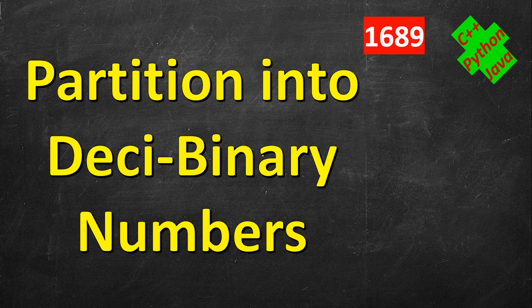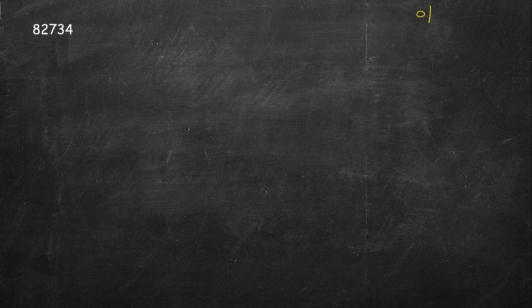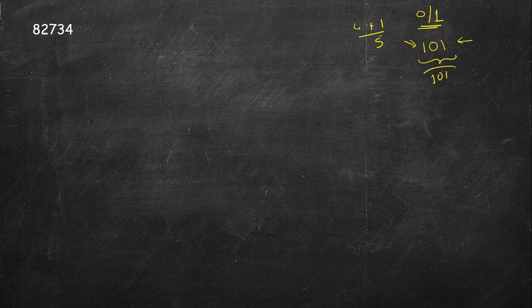In this video we are going to partition a decimal number into different decibinary numbers. A number is a decibinary number if its digits consist of either 0 or 1 — that is, they are themselves binary digits. We ignore leading zeros, so for example 101 is a decibinary number. We read it as 101, not as the binary value 5.